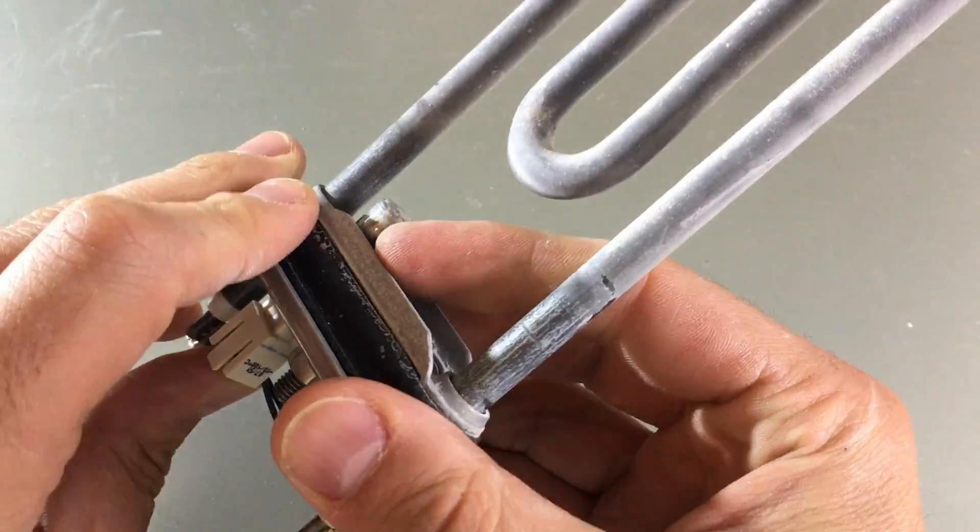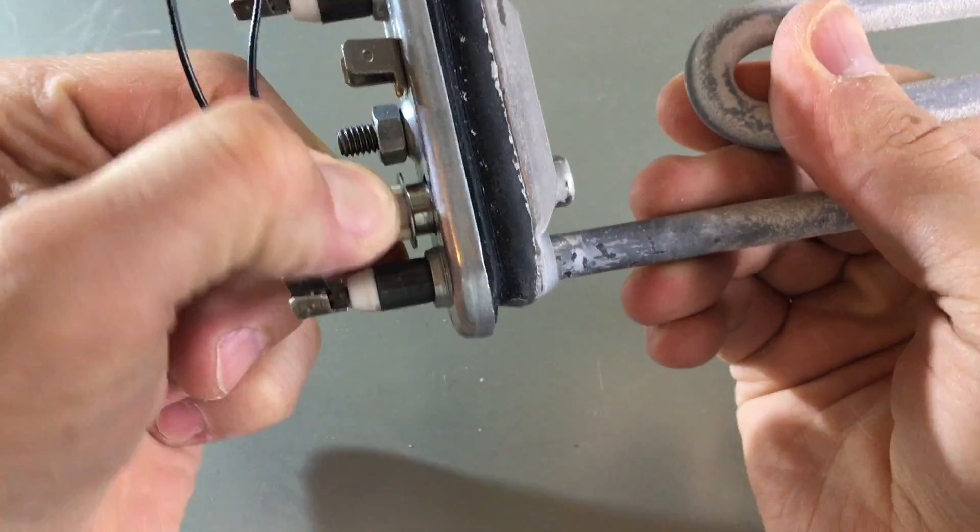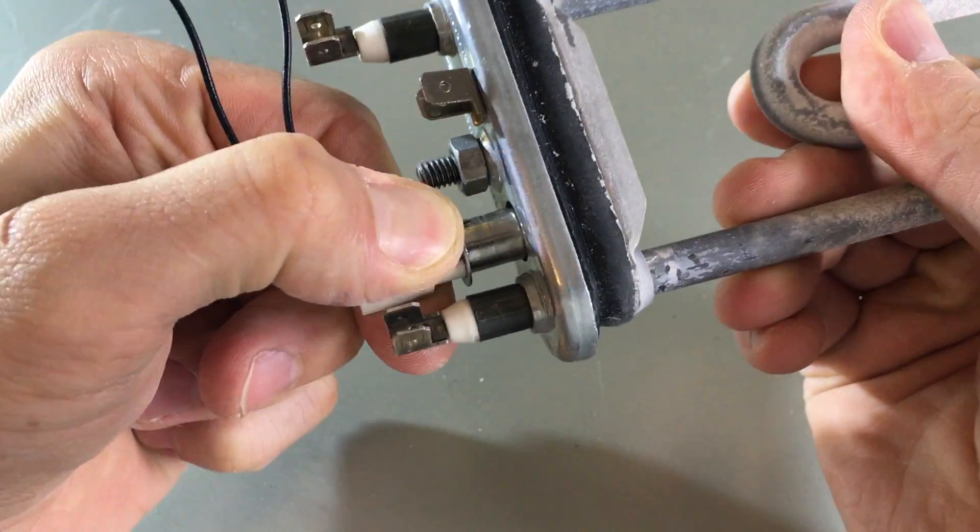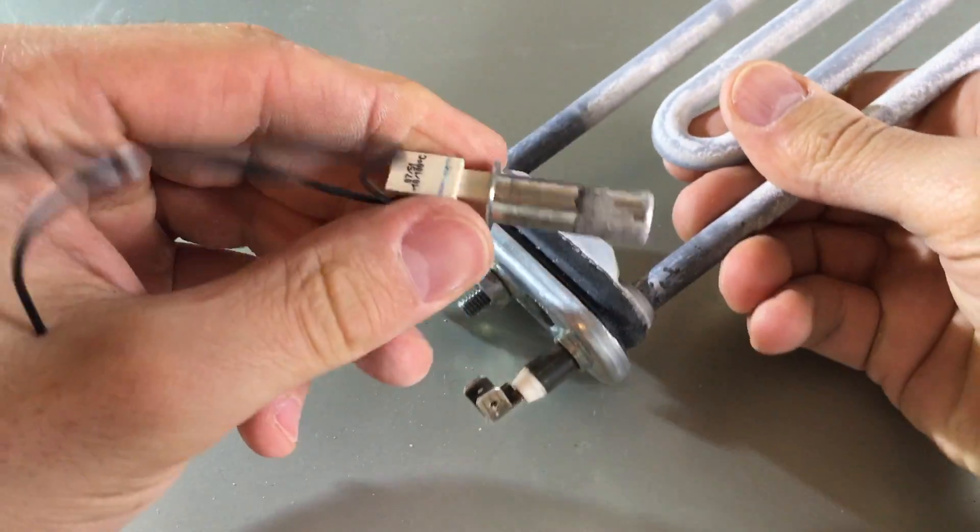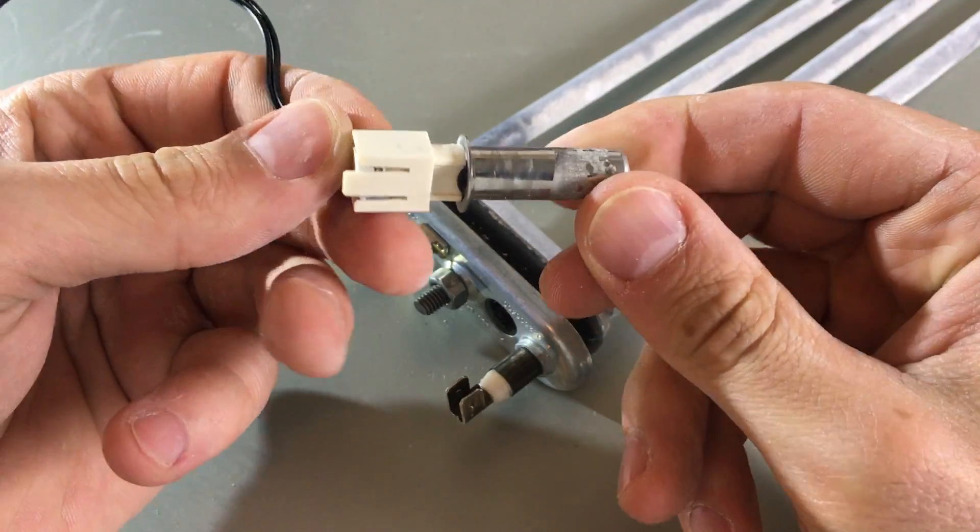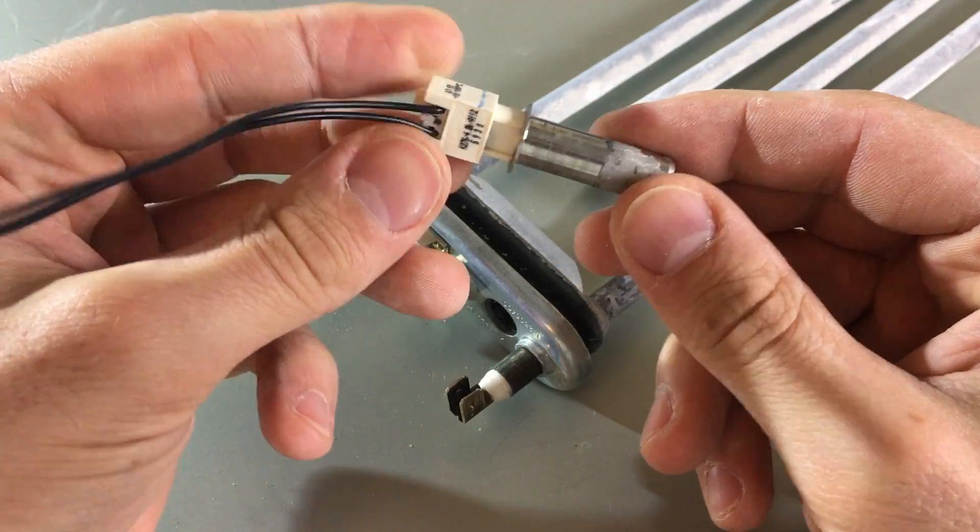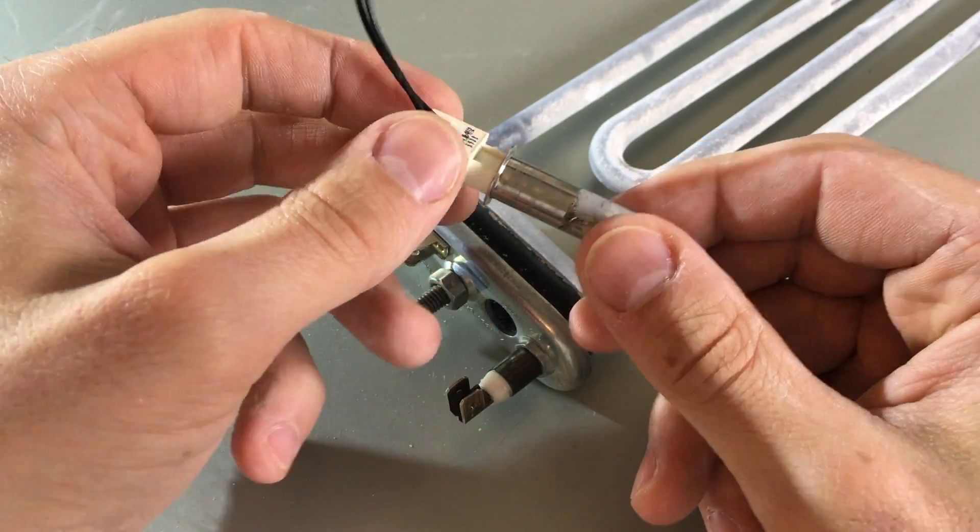This funny guy that is poking into the water here is the temperature sensor. You see it's just plugged in there and basically just a resistive element that changes resistance according to the temperature. Maybe you can check this out later.